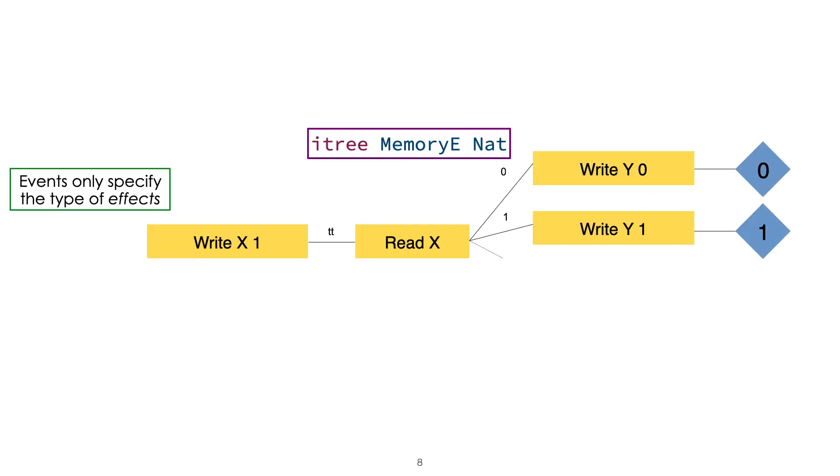More specifically, if we try to understand how one can use interaction trees to give the semantics to a language, the idea would be in two steps. In the middle part, you have the representation of your program as one of these trees. Here, for instance, consider a program that will write a certain value to x, then read back from x, and write whatever value you get back to y. Of course, intuitively, you expect your read to x to get 1. However, at this stage, events do not have any semantics.